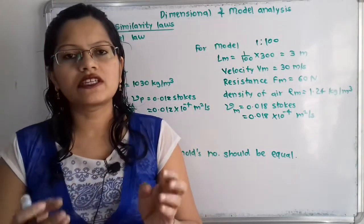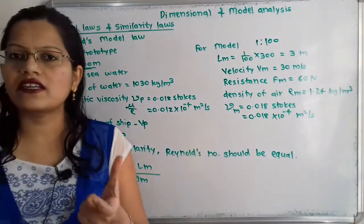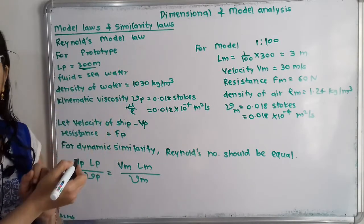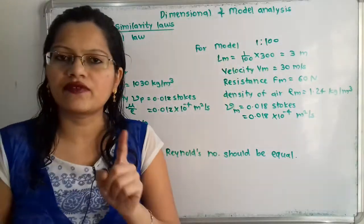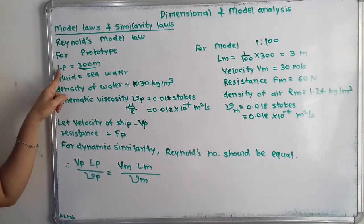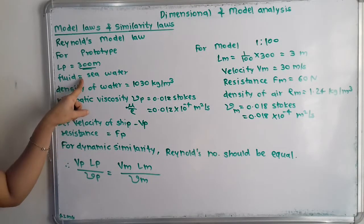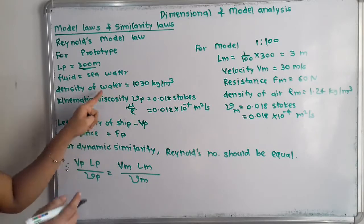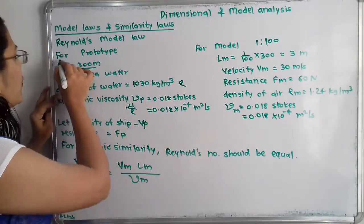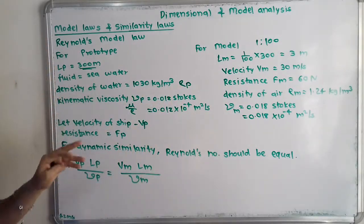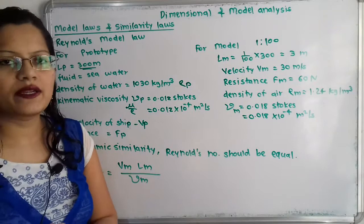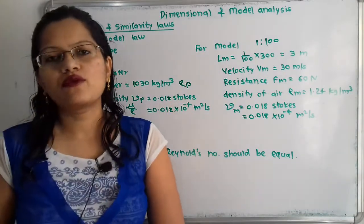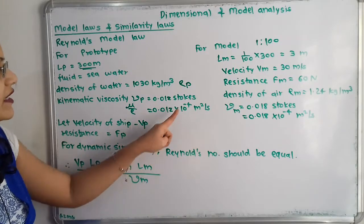We will now organize the given data. For the prototype, we use suffix 'p'; for the model, we use suffix 'm'. For the prototype: length Lp = 300 m, fluid is seawater, density ρp = 1030 kg/m³, kinematic viscosity νp = 0.012 stokes, which we convert to 0.012 × 10⁻⁴ m²/s.